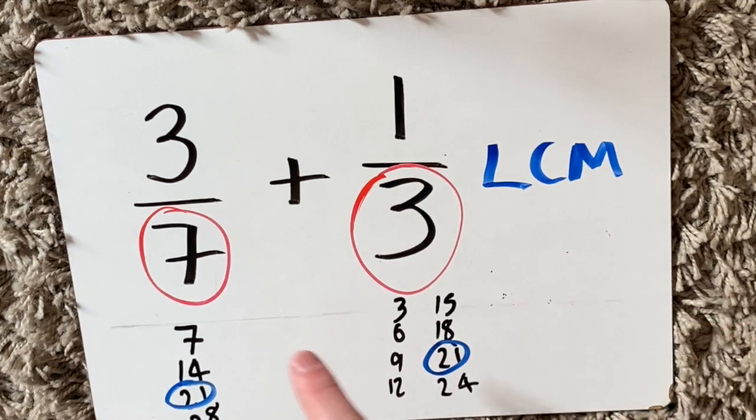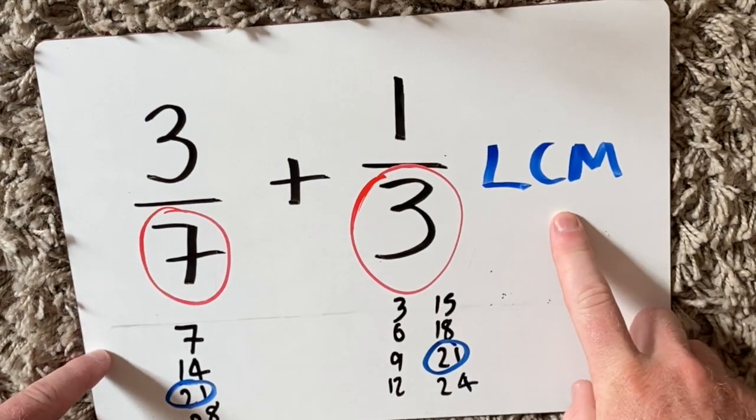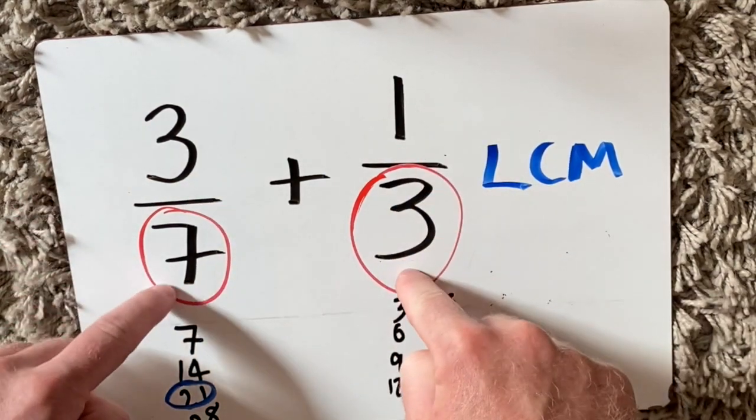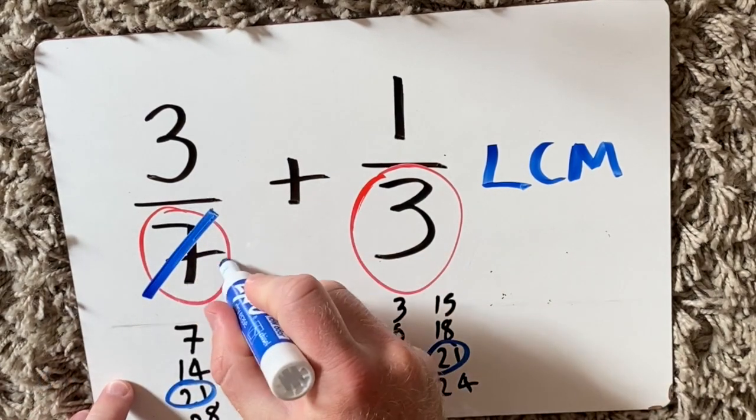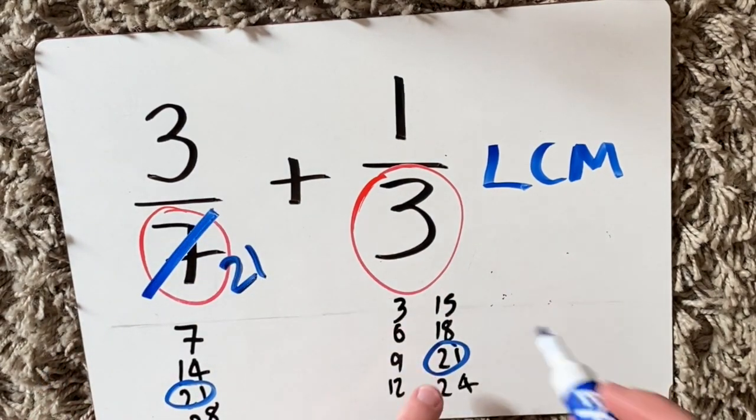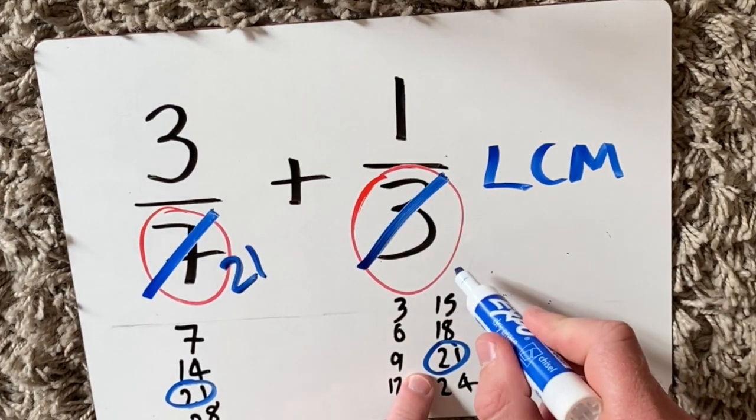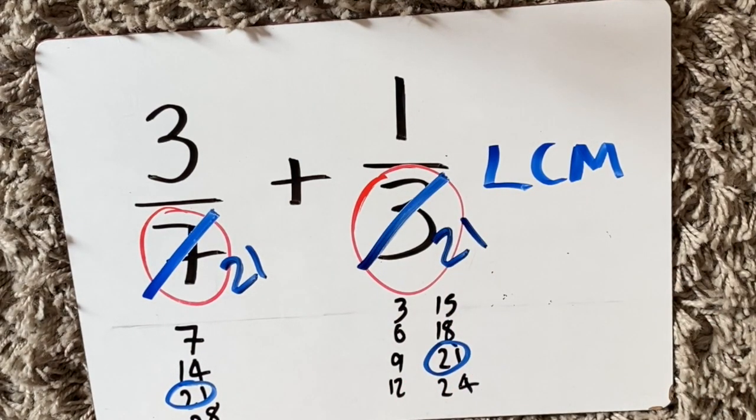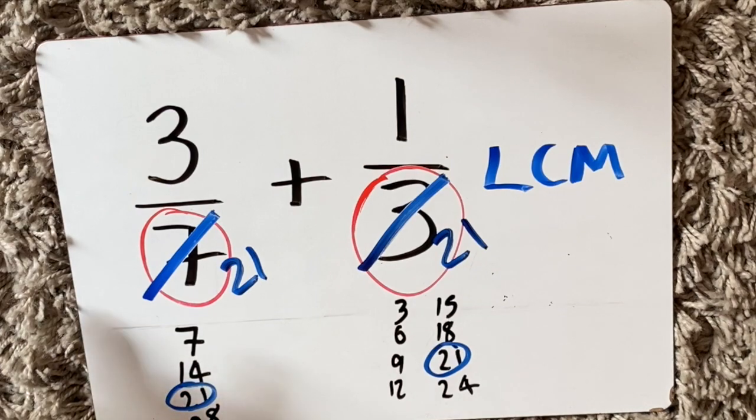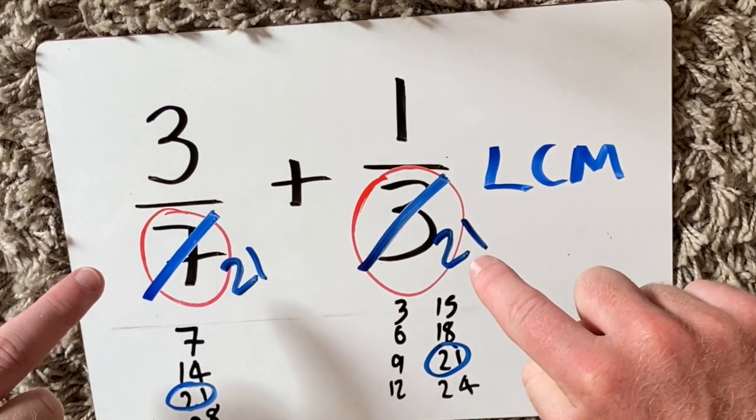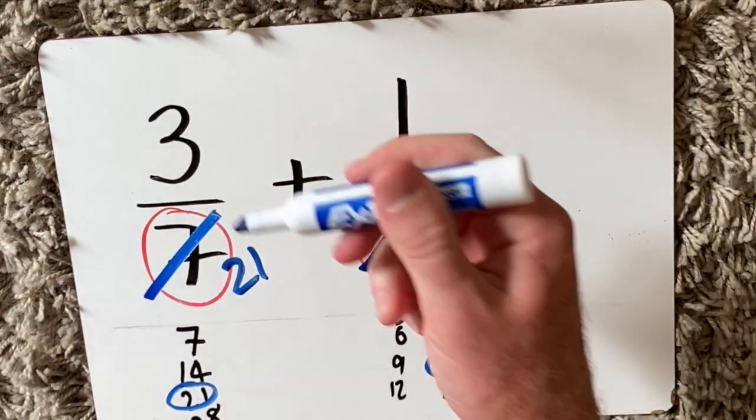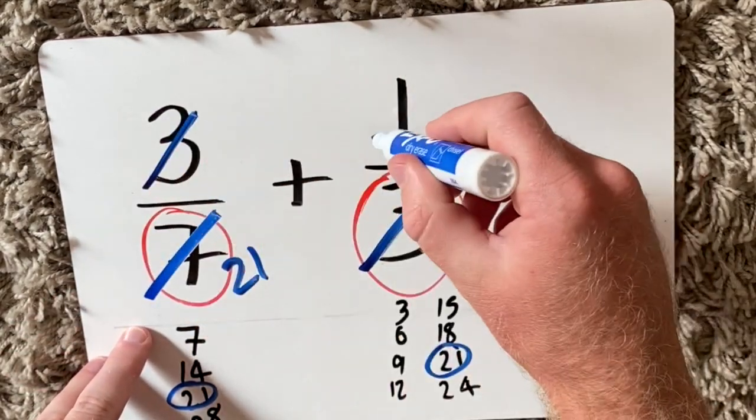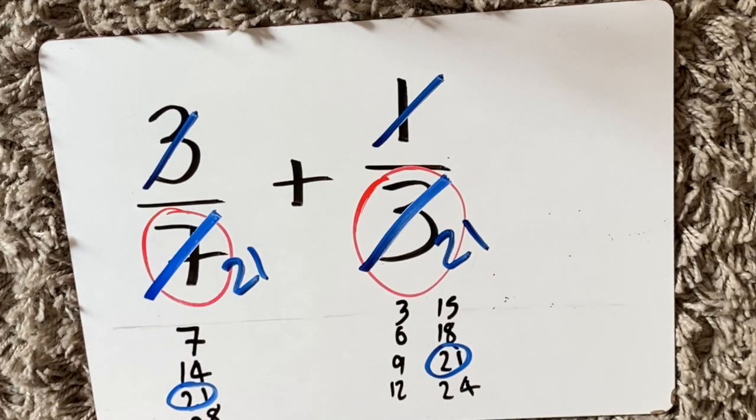So I've found the lowest common multiple. What that means is I have to change both of these fractions so the denominator is not seven, but twenty-one. And I have to change this three into twenty-one as well. Now I need to figure out what the numerators are going to change to because they cannot stay the same.